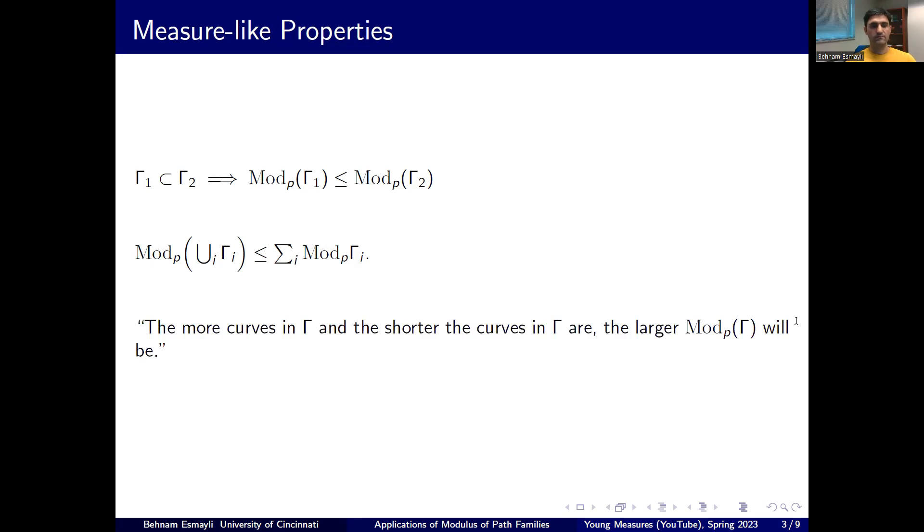And in general, the more curves you have in a family, and the shorter they are, the modulus becomes larger. And the shorter they become can be defined in the following sense that every curve in your gamma 2 family has a sub-curve that belongs to the gamma 1 family. Actually that also has been denoted by something like gamma 1 less than or equal to gamma 2, as opposed to being a subset. But anyway, these give mod p some measure-like behavior.